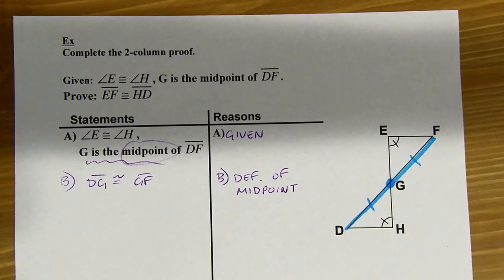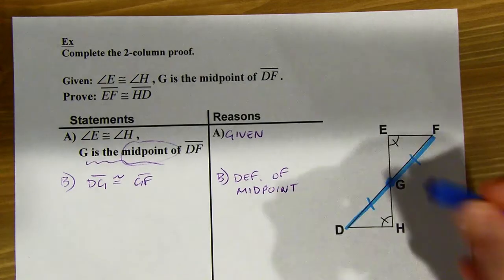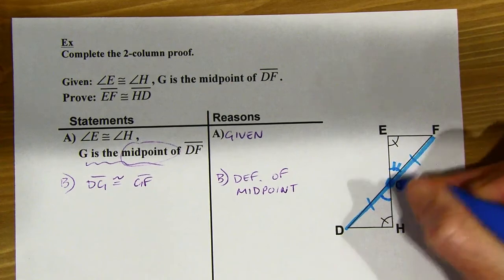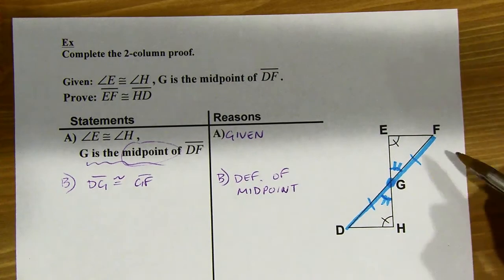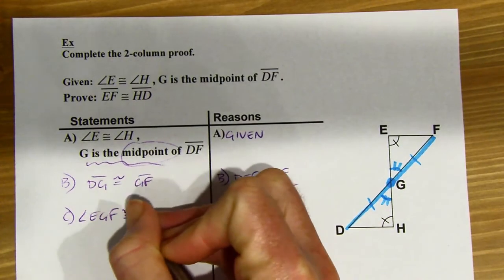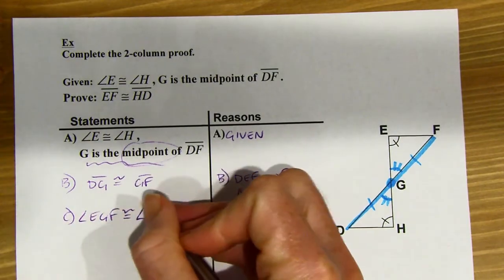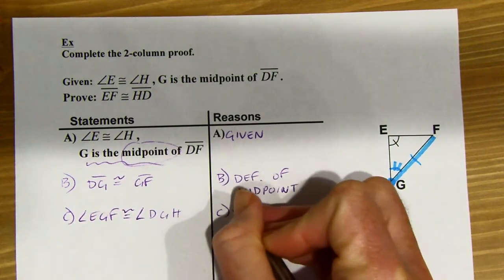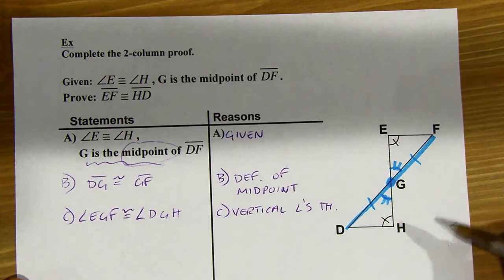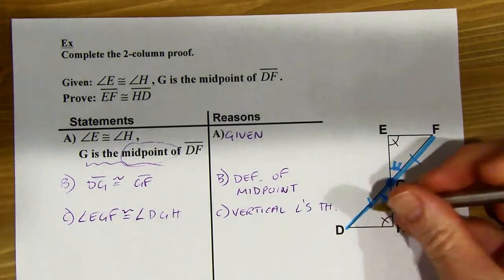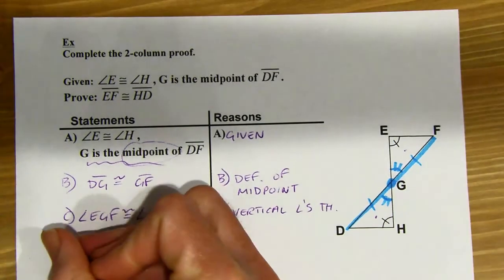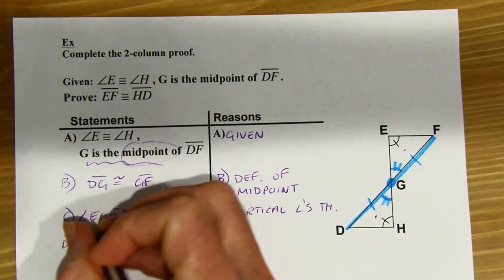Looking pretty good — I've got a side and an angle, but I still need something else. With these intersecting lines, I can always use the vertical angle theorem on bow tie problems. Those two angles are going to be congruent. I'll call the top one EGF and the bottom one DGH. That's the vertical angles theorem.